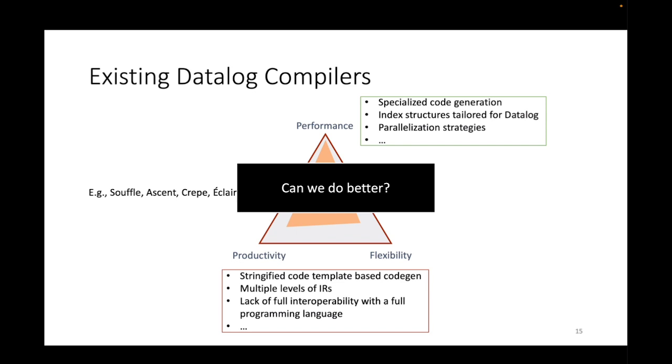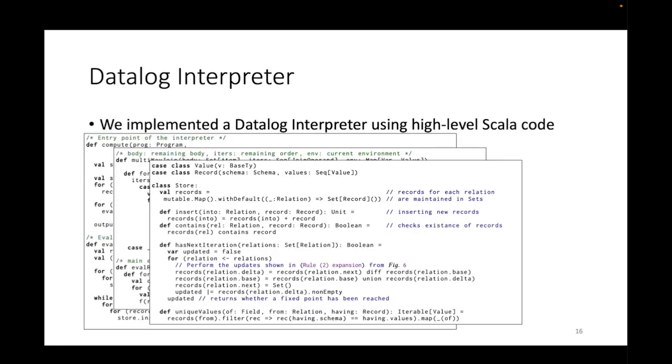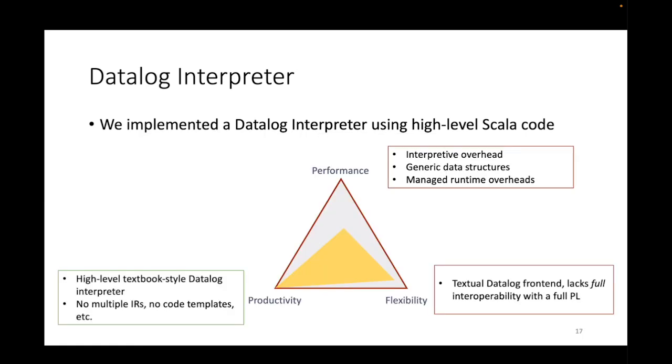In this work we asked the question: can we do better? We started off by building an interpreter. We implemented a high-level Datalog interpreter using high-level Scala. This is sort of like a textbook implementation of semi-naive evaluation implemented using high-level abstractions in Scala. With this implementation, what we get is a system that has really good productivity because our core Datalog engine simply has high-level textbook style Datalog interpreter code and there are no multiple intermediate representations, no stringified code templates. But the problem is the performance is significantly lower than the compiled counterparts. This is because there's going to be significant interpretive overhead - it could be because of the fact that we use generic data structures and other overheads.